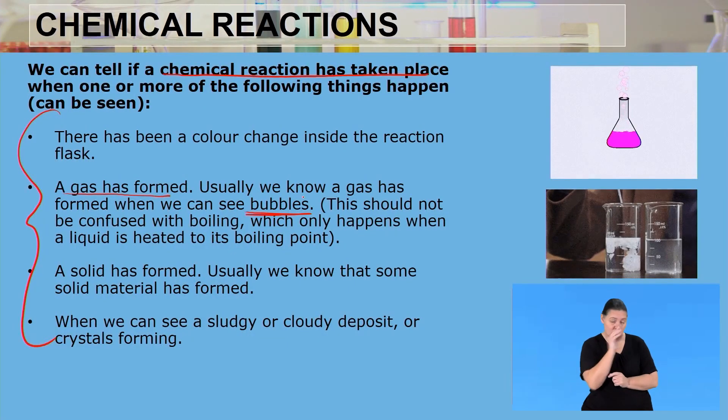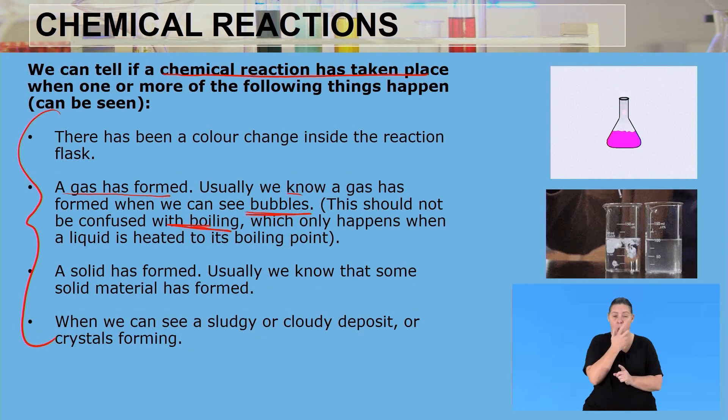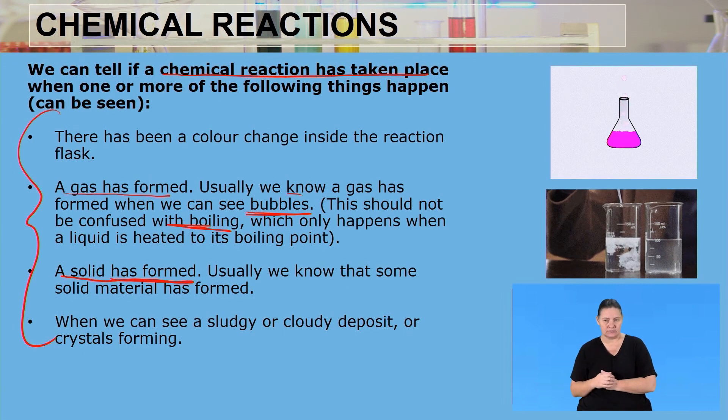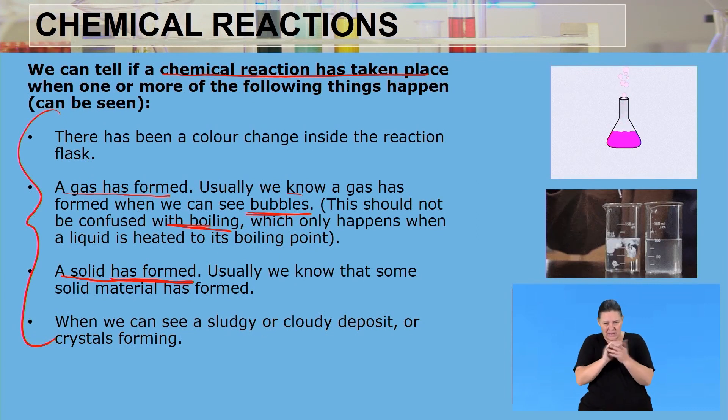We should not confuse bubbles with boiling — boiling only happens when a liquid is heated. Also, when a solid is being formed: when you mix two substances and a solid forms, that solid is called a precipitate. When a precipitate is formed, a chemical reaction has taken place. Lastly, when you see a sludgy or cloudy deposit on the reaction flask, a chemical reaction has taken place. One of these four signs needs to occur for us to confirm a chemical reaction.